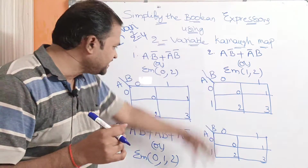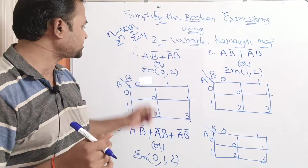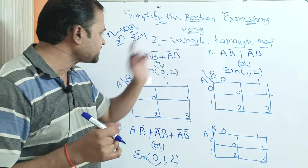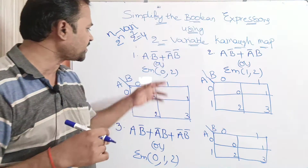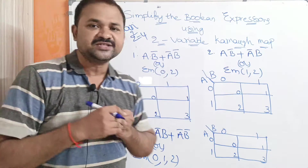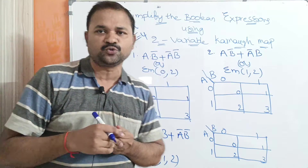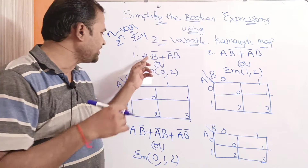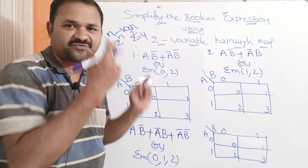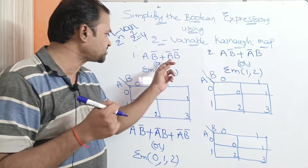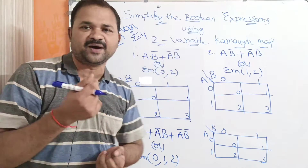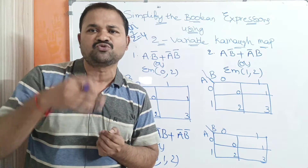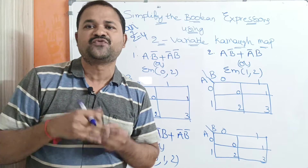Let us solve these three examples. The first example is ab̄ + āb̄, or sigma m of 0 comma 2. We have two variables, so totally we will have 2 to the power 2, giving four cells. On the left-hand side we have 'a' and on the right-hand side 'b'.